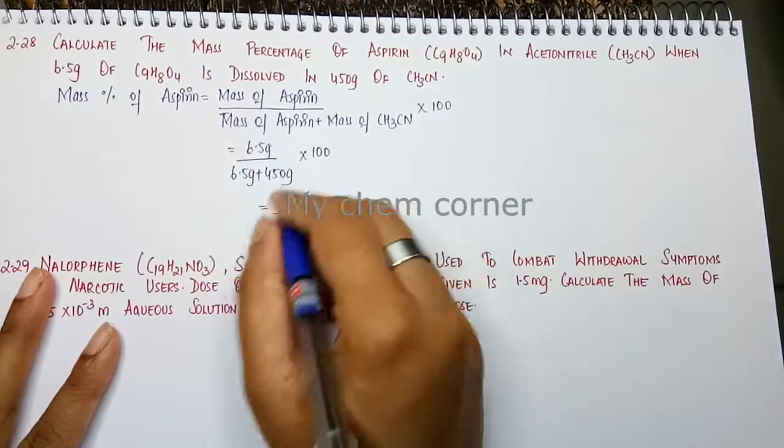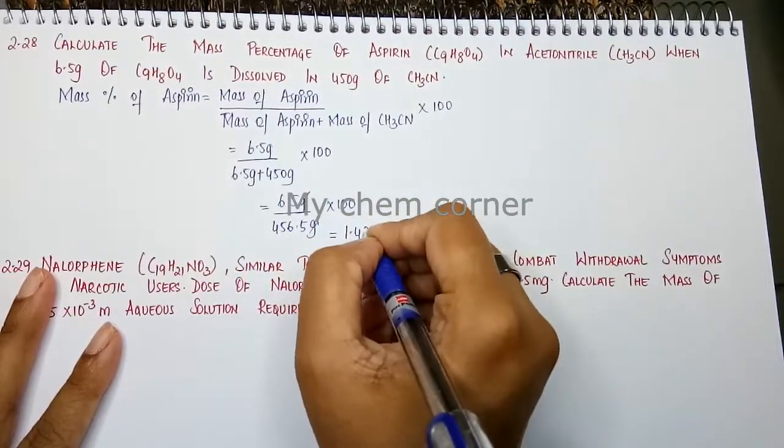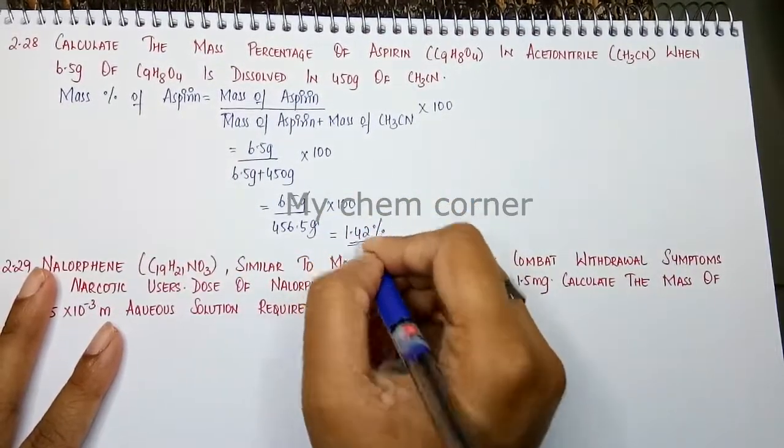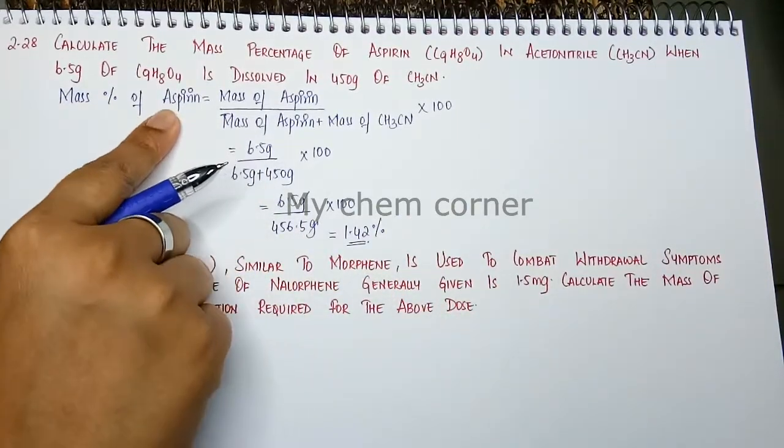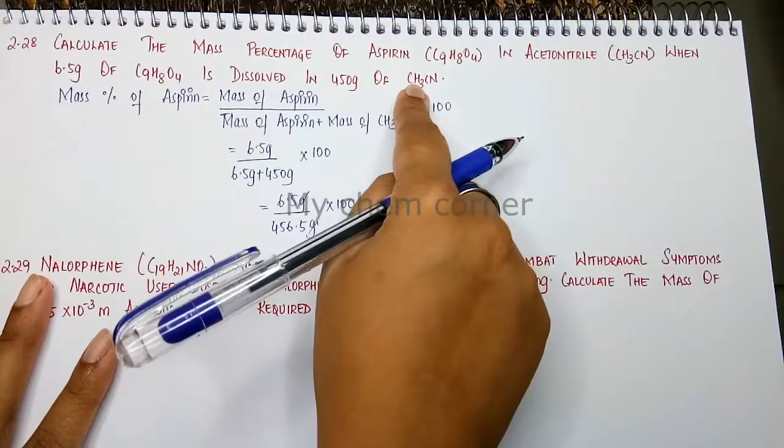Gram and gram will get cancelled. When I solve this it will become 1.42%. This is going to be the mass percentage of aspirin when they are dissolved in acetonitrile.